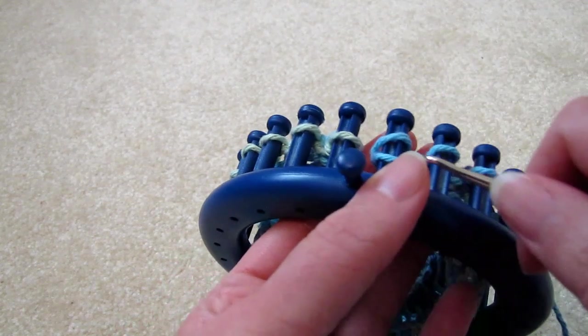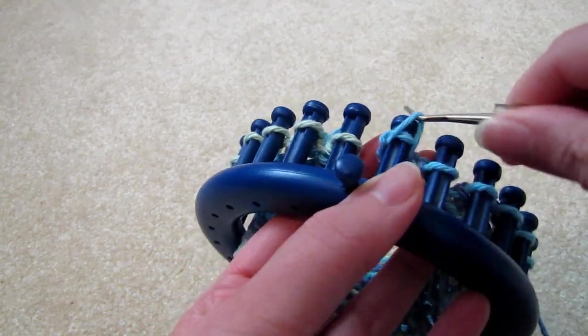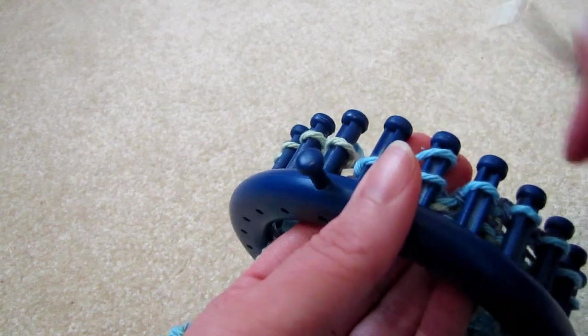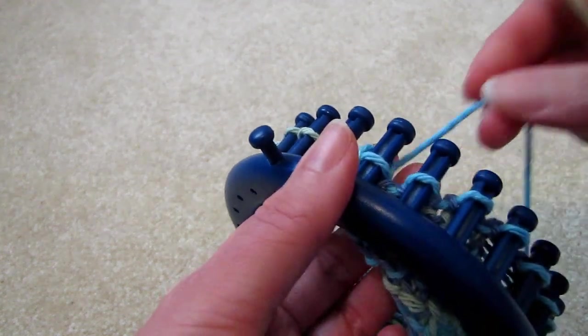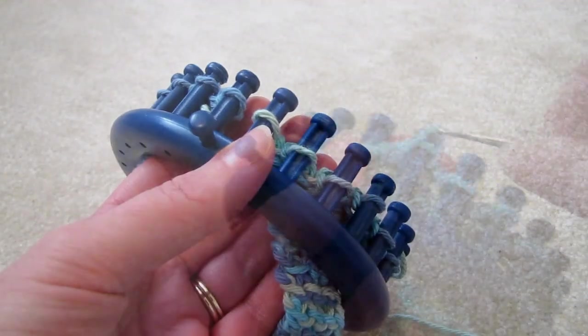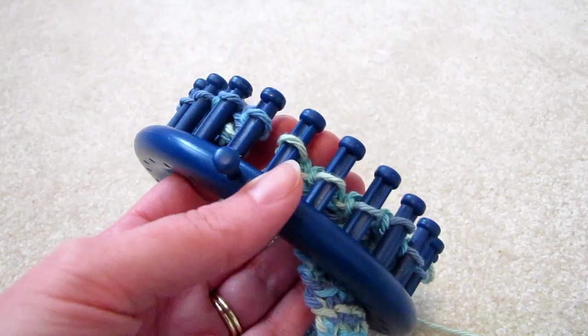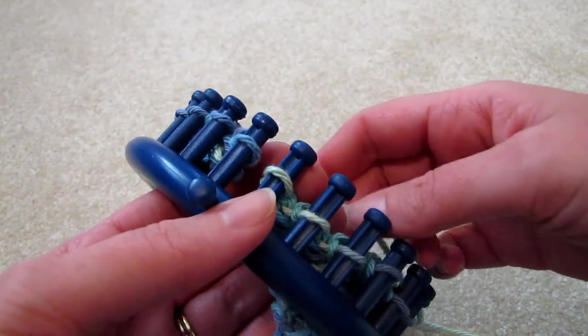Let's do one row in the knit stitch, then do this twice more. We've knitted and purled three rows, so it's time to cast off.